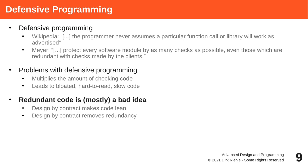You may have heard about defensive programming, in which a method checks everything it could possibly check. The problem with defensive programming is that if every method checks everything, there will be a lot of redundant checking — and such redundant code is bad. You want minimal, lean code. If you redundantly check for things that can go wrong all over the place and then something changes, you may not find all the instances of that checking code. Design by contract gives you exactly that solution: checking needs to be done only once at a well-defined place.